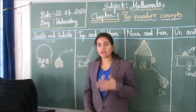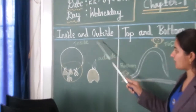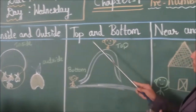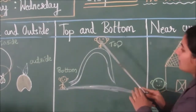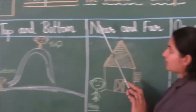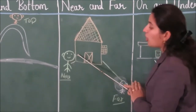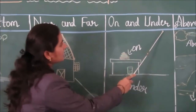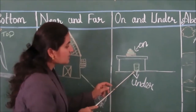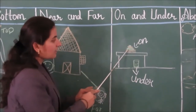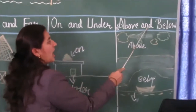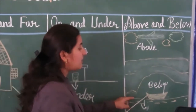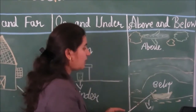Let us see what we have learnt. Inside and outside: the apples are inside the basket, and one apple is outside the basket. Top and bottom: you are at the top of the slide and your brother is at the bottom. Near and far: you are near your home and your friend is far away from the home. On and under: the book is on the table and the basket is under the table. Above and below: the aeroplane is flying above the bridge and the boat is sailing below the bridge.